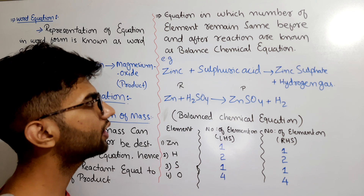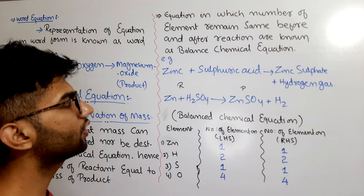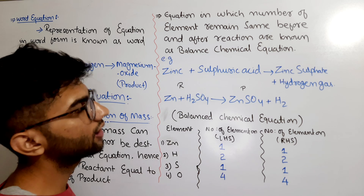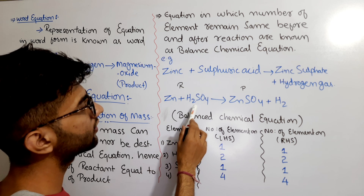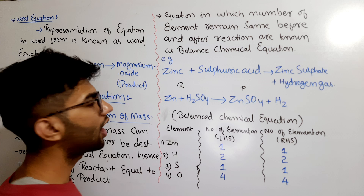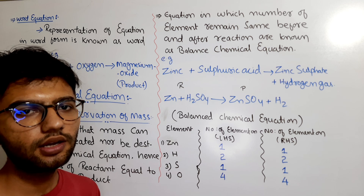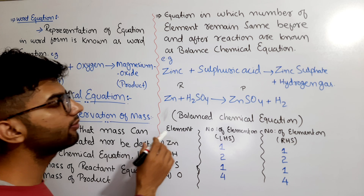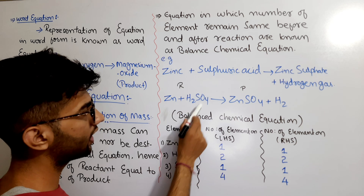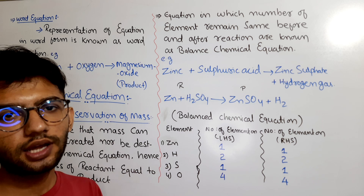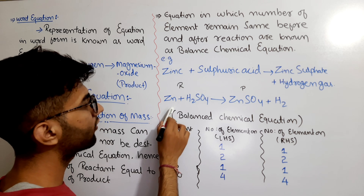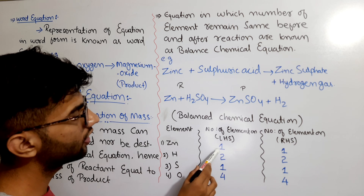Here is an example: when zinc reacts with sulfuric acid (H₂SO₄), it forms zinc sulfate (ZnSO₄) along with hydrogen gas (H₂). The reactants are written on the left hand side. The different elements present on the reactant side are: zinc, hydrogen, sulfur, and oxygen — four different elements in total.